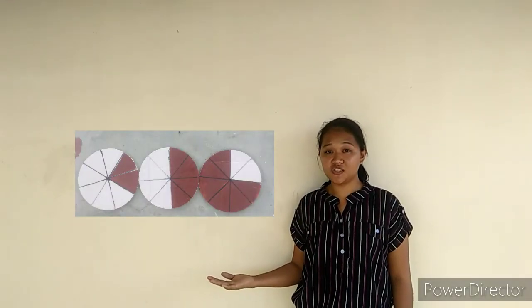Do we consider these three circles are similar fractions? Because they are all divided into eight equal parts that will serve as their denominator.